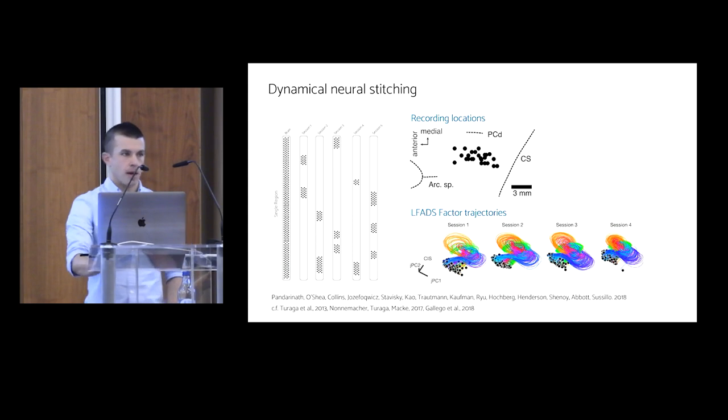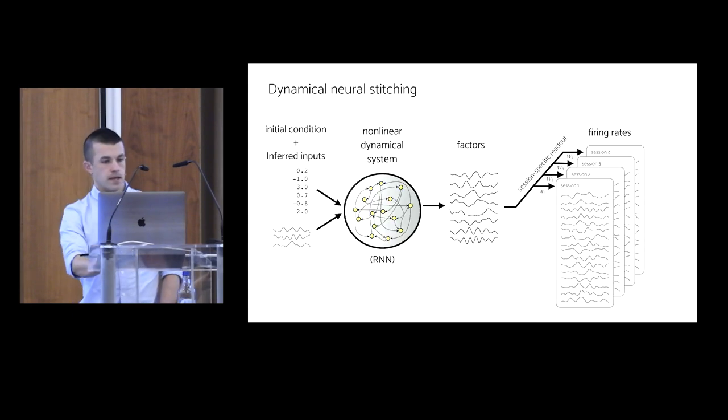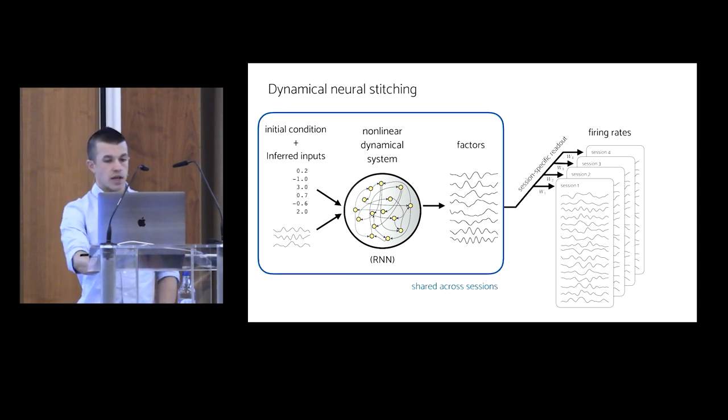We actually tackled a much simpler problem in the published LFADS paper, using data where we record a new population of neurons from the same patch of motor and premotor cortex across many recording sessions. We developed an approach we call dynamical neural stitching and showed that this approach works really well for inferring stable, latent, reach-related single trial dynamics as depicted by the similar trajectories across sessions in these colorful plots on the right. The core idea is simply to use a unique readout for each session's group of neurons, which transforms the rates, the factors, into rates for that session. Everything else is shared across sessions, including the factor readout from the RNN. This leaves us with a single dynamical model capable of generating all of the data.